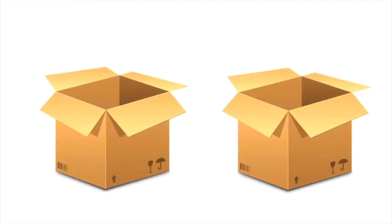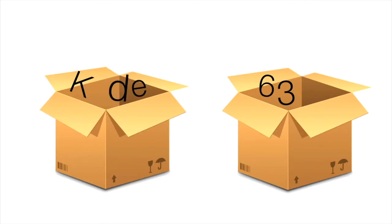Variables are used to store information in a program. You can think of them like a box or a container with a label on it that's related to the items inside. These items inside are called values and they can be stored as either numbers or text. When you use a variable in a program, you control the output of a program or what the user sees. There are different types of variables that can be used in different situations.